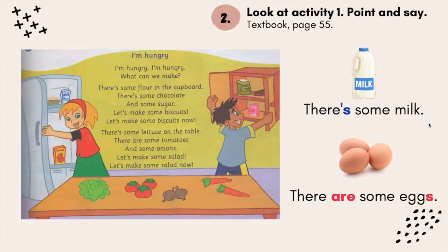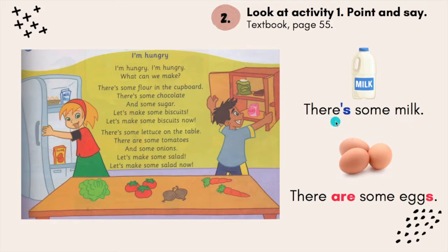Now, before we proceed with today's lesson, let's look at some grammar. If the thing is uncountable, you use: there's some milk. If the thing is countable, you use: there are some eggs.